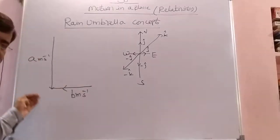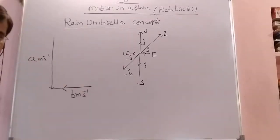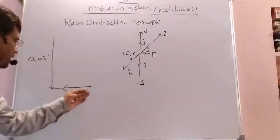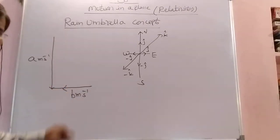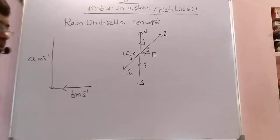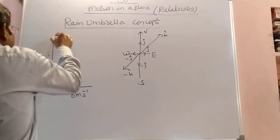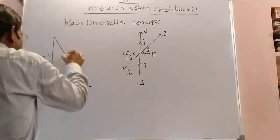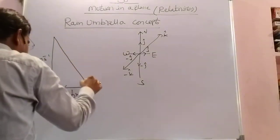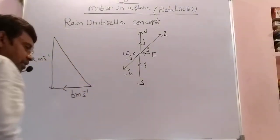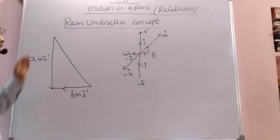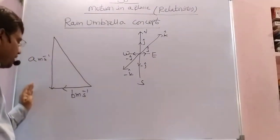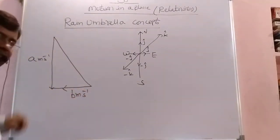Rain is falling vertically downward. The man is travelling in the west direction with 'b' meters per second. At that time, the rain appears to him at an angle — not vertically, but tilted. It appears like this: vertically downward and horizontally shifted.